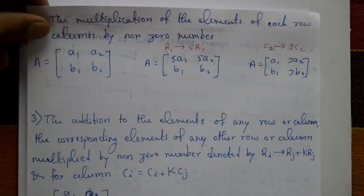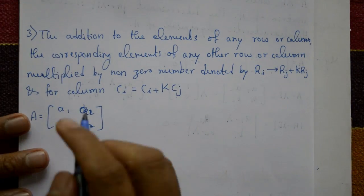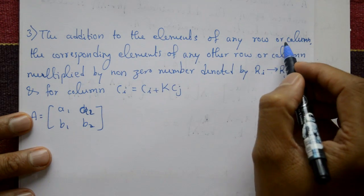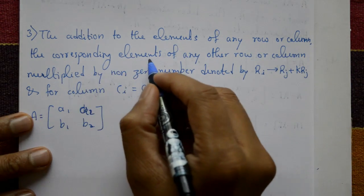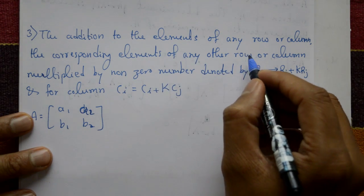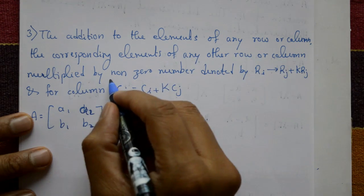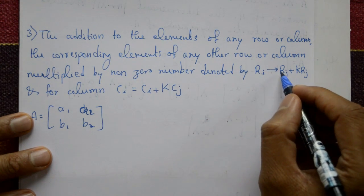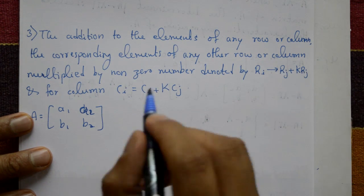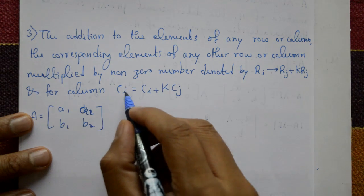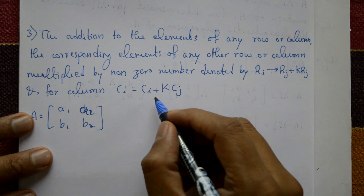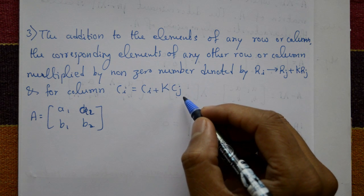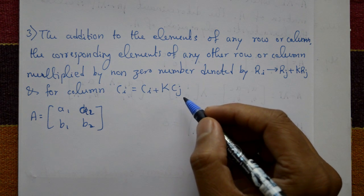Third point: the addition to the elements of any row or column of the corresponding elements of any other row or column multiplied by a non-zero number. This is denoted as ri equals ri plus k times rj for rows, and ci equals ci plus k times cj for columns.